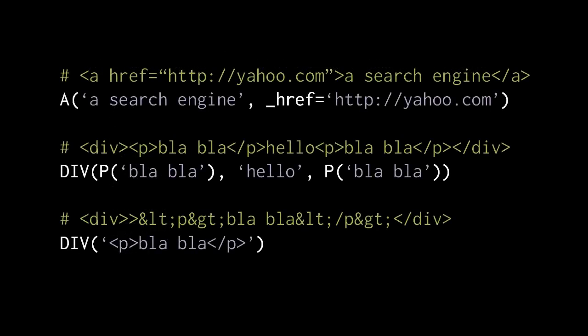Here are a few examples. First, we're creating an object representing an anchor tag, and the content of that tag is passed as the first argument as a string. Any attributes to the tag are passed as named arguments, but notice the named argument starts with an underscore. So to set the href, we have a named argument underscore href. The common pattern is that positional arguments become the content of the tag, and attributes are passed as named arguments with an underscore at the start.